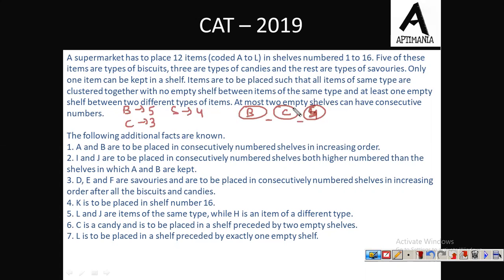At most 2 empty shelves can have consecutive numbers — we cannot have more than 2 consecutive empty shelves.